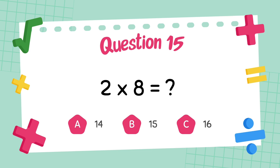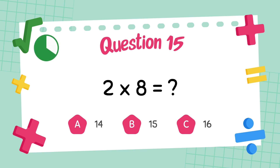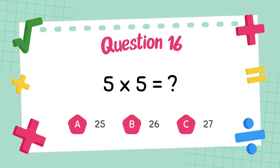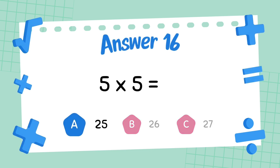What is 9 multiply 5? The answer is 25. What is 5 multiply 5? The answer is 25.